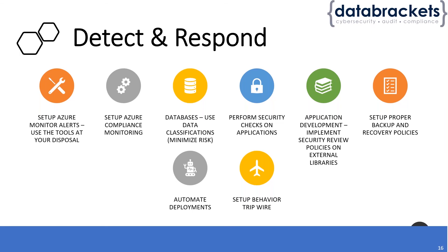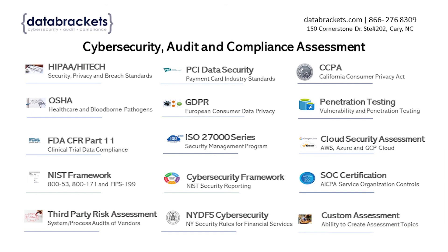If one region of Azure goes down, you can recover in another Azure region or even in AWS. Then there's tripwise — part of the rules engine — where you contextualize and set up rules like when to deny access, when to completely lock an account, or deny access to specific requests. For more information, click on the link below or visit databrackets.com.